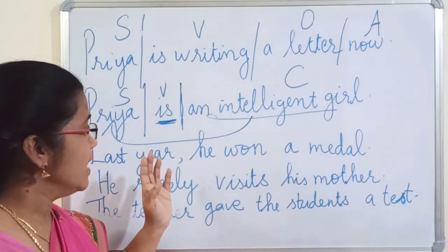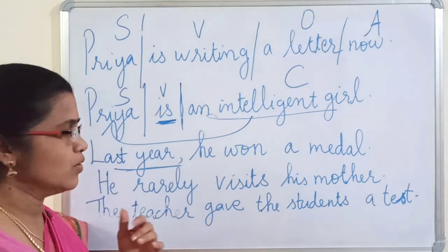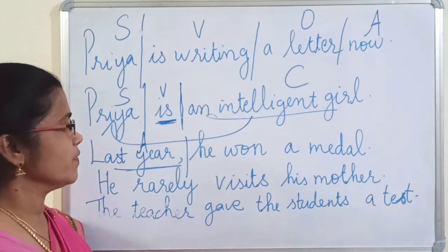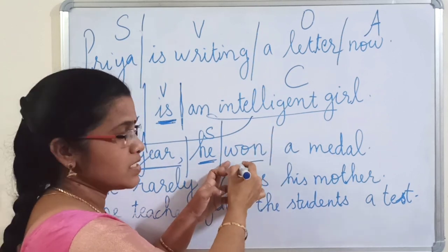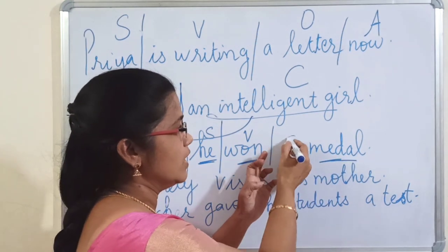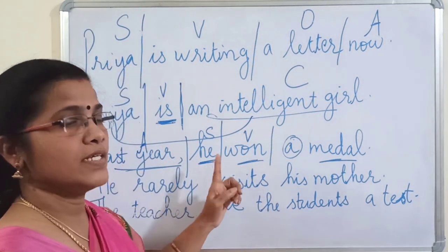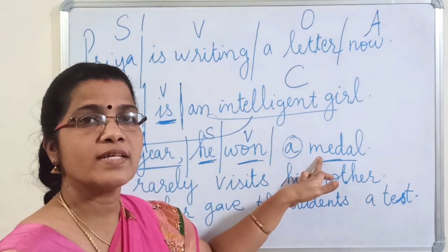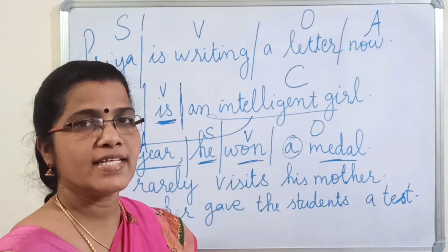Third sentence: 'Last year he won a medal.' 'Last year' shows time, so it is an adjunct (A). 'He' is the subject. 'Won' is the action word — the verb. When you ask 'What did he win?' the answer is 'a medal,' which answers 'what' — so it is the object. The pattern is A-S-V-O.